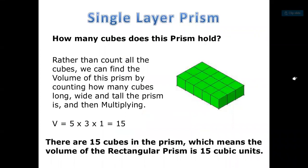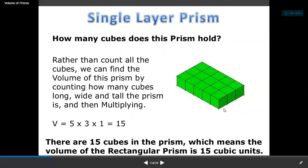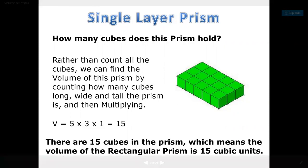How many cubes does this prism hold? We are going to multiply the number of cubes in the dimensions. We have 1 for the height, 3 for the width, and 5 for the length. So we just multiply 5 times 3 times 1 to get 15.